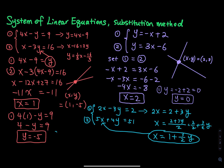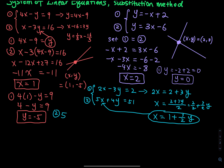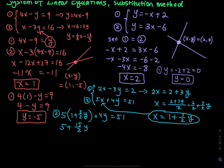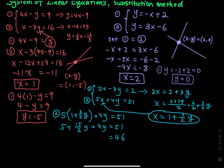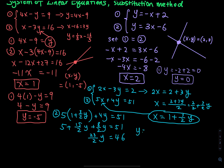The second equation becomes 5 times (1 plus three-halves y) plus 4y equals 51. Distributing 5: 5 plus fifteen-halves y plus 4y equals 51. Subtracting 5 from both sides leaves 46. Using a common denominator, 4y is eight-halves y, so fifteen-halves plus eight-halves gives twenty-three-halves y equals 46. Multiplying by the reciprocal 2 over 23, y equals 4.